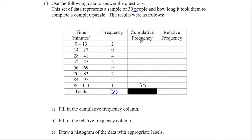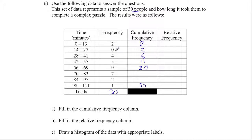By the time I get to cumulative frequency, the last value should be 30, because I'm adding up all the frequencies up to that point. The frequency is 2, so it's just 2. Then 2 plus 0 is still 2. For the next interval, 2 plus 0 plus 4 is 6. Then 6 plus 5 is 11. Then 11 plus 9 is 20. Then 20 plus 7 is 27. Adding 2 gives 29. And then all these plus 1 is 30.